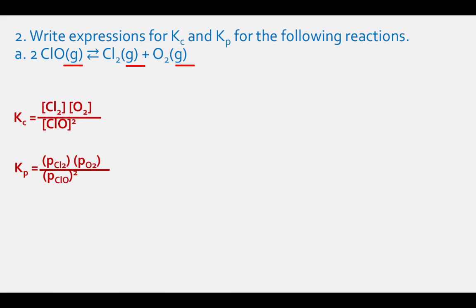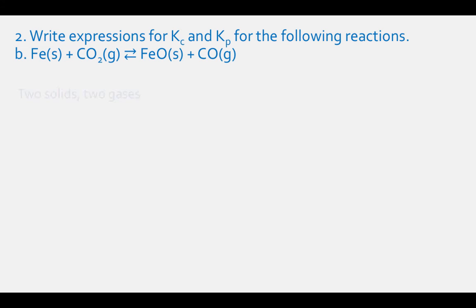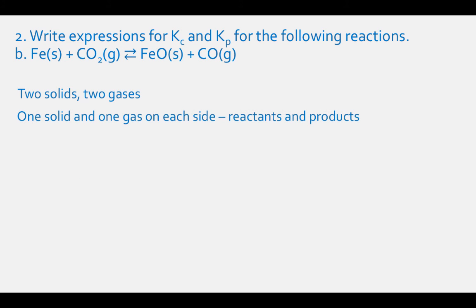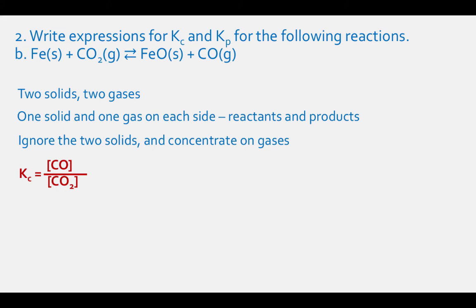For reaction (b), Fe solid plus CO2 gas in equilibrium with FeO solid plus CO gas, we have two solids and two gases — one solid and one gas on each side. We ignore the two solids and concentrate on the two gases. The Kc expression is the concentration of CO divided by the concentration of CO2. The Kp expression is the partial pressure of CO divided by the partial pressure of CO2.